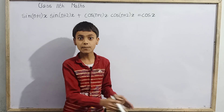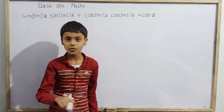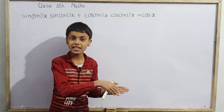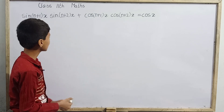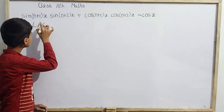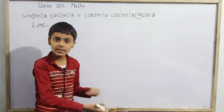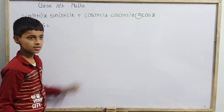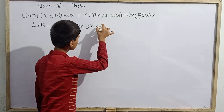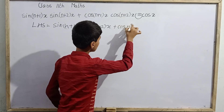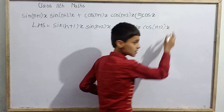So first of all, since in this problem we will write our LHS. After that RHS, and then we have to prove that LHS equals RHS. So here we can write LHS, which is everything before the equality symbol: sin of (n+1)x times sin of (n+2)x, plus cos of (n+1)x times cos of (n+2)x. This is our LHS.